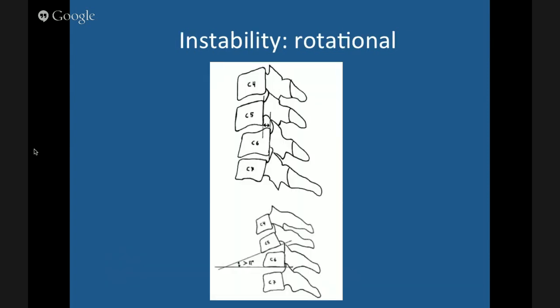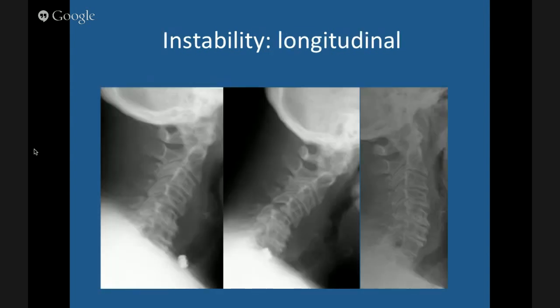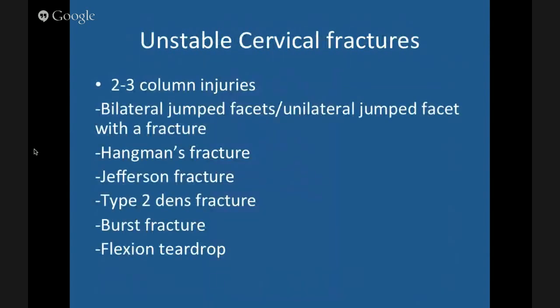For rotational instability — a lot of people don't talk about that. Measure the change in angulation of the disc from the level above to the inferior end plate below. If flexion increases that angle by more than 11 degrees, there is rotational instability as well as longitudinal instability. A patient may not only be translating anteriorly but also bending — so they have both rotational and longitudinal instability. If angulation changes more than 11 degrees, that's rotational instability.